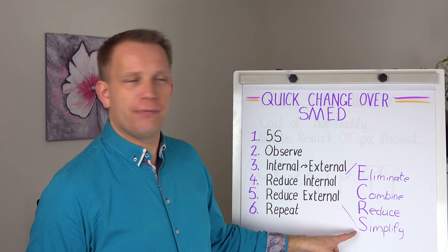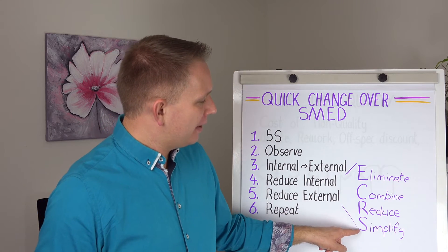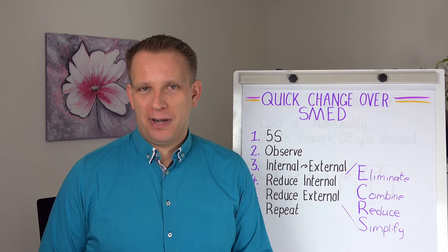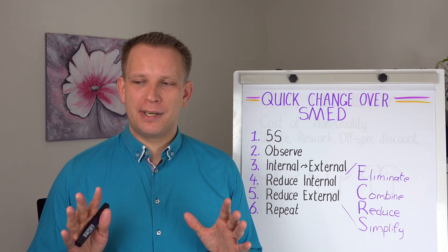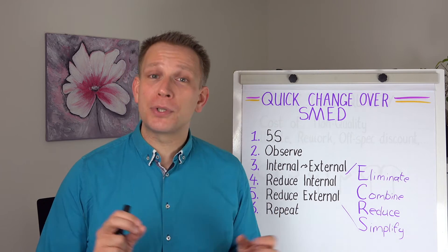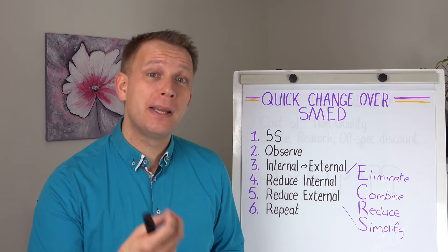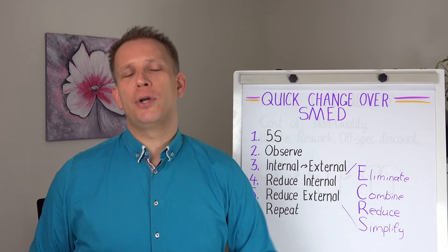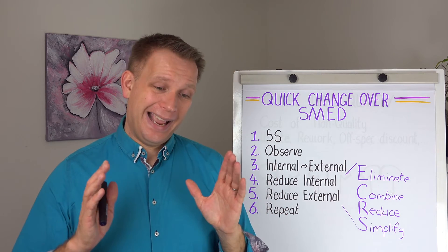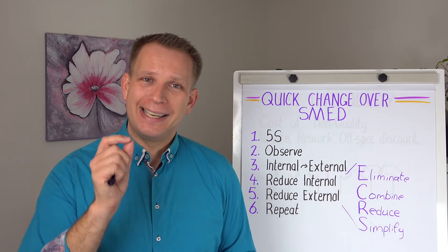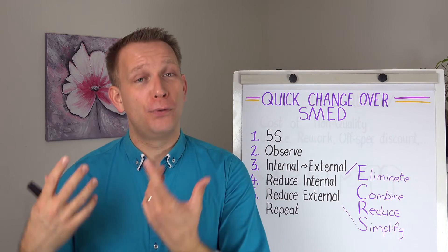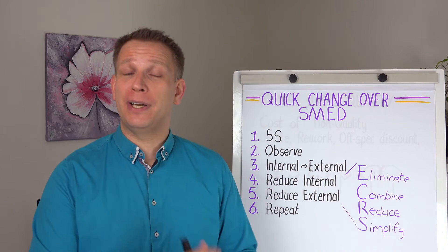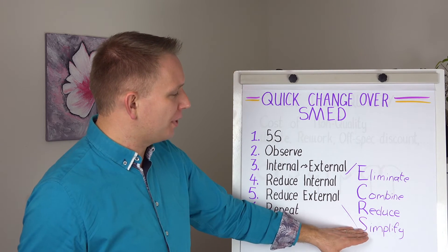And then, and this one is often forgotten, is okay, so those things that we could not eliminate or reduce, can we simplify everything that is left? So maybe that doesn't save us too much time, but it will save us a lot in operator attention. Or maybe, again, make it possible to then combine stuff. But really check all of those tasks that are left. How can we make them as easy as possible? This will also likely make them more foolproof. Reducing your chance of defects of things going wrong with your machine during a changeover. So, important step as well.